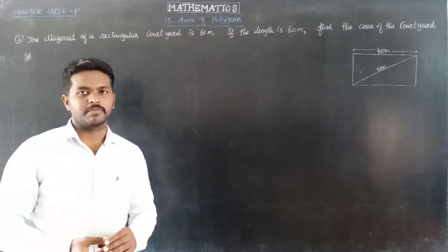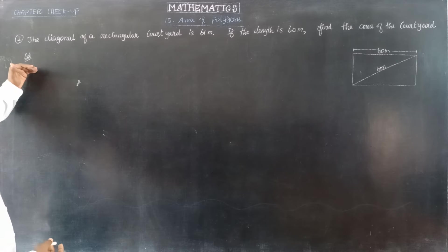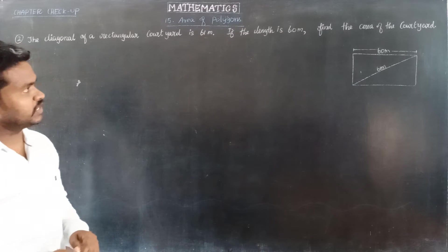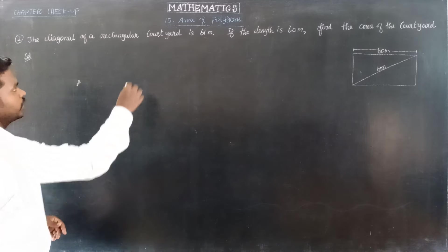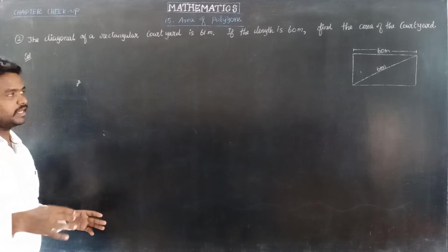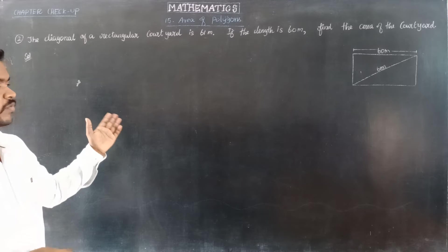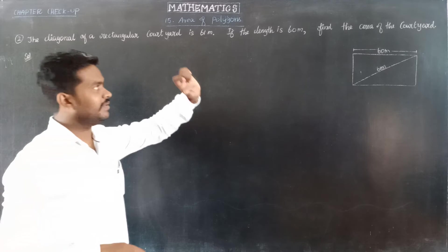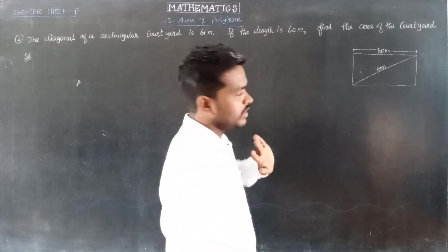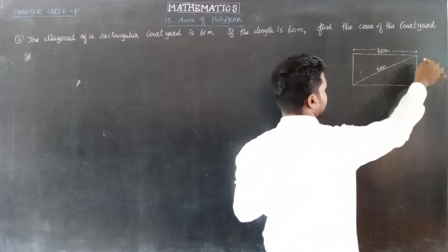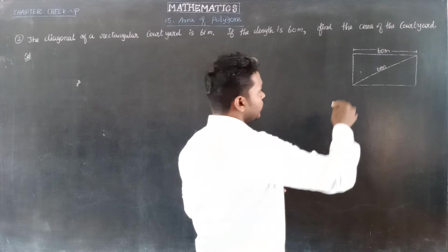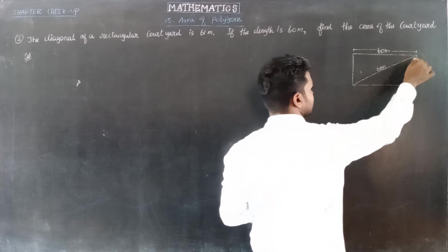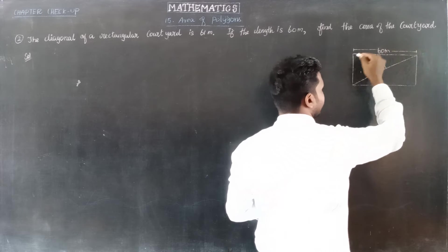Hi, hello friends. Next chapter check-up, question number two. The diagonal of a rectangular courtyard is 61 meters, the length is 60 meters. Find the area of the courtyard. So the courtyard has an area — it's an empty ground with four outer walls. One length is 60 meters, diagonal is 61 meters. Find the area.